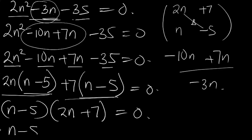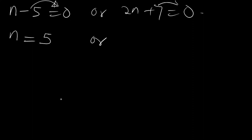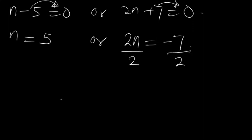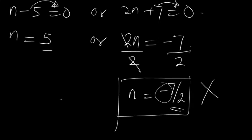So either n − 5 = 0 or 2n + 7 = 0. From the first: n = 5. From the second: 2n = −7, so n = −7/2. Since −7/2 is a fraction and a negative value, it is not a valid solution. Since n = 5 is a positive integer, it is the valid solution. Therefore the value of n is 5. That is the final answer.